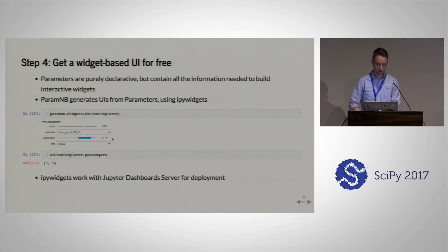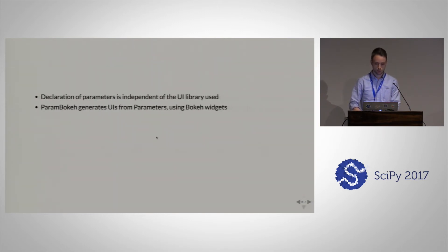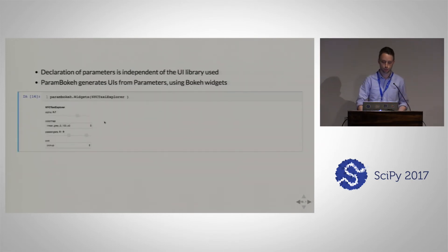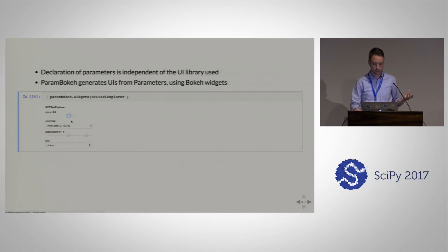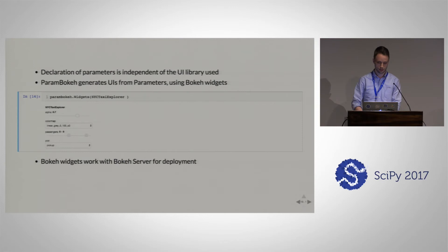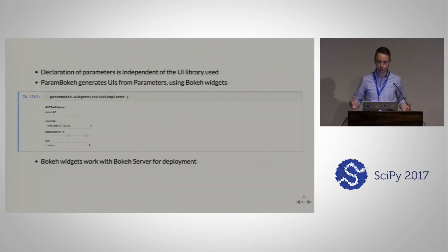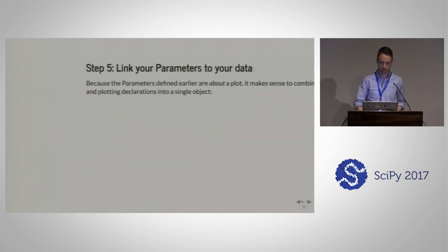That's why we actually decided to write the ParamBokeh library, which is based on Bokeh widgets and works in just the same way. Previously we called ParamNB.widgets to get the set of widgets; now we use ParamBokeh.widgets and it gives us Bokeh widgets instead of IPyWidgets. The actual values are immediately reflected on our parameterized object. Bokeh widgets has a nice property that it's based on Bokeh, which has Bokeh Server, so we can deploy as a standalone app.